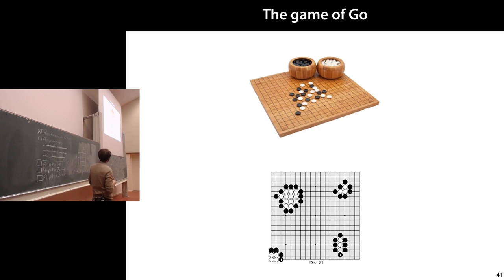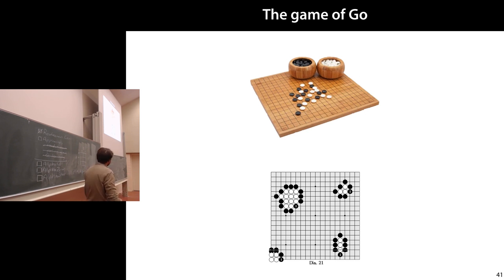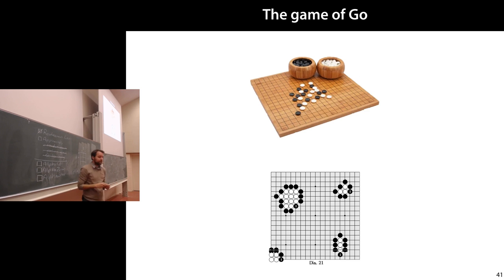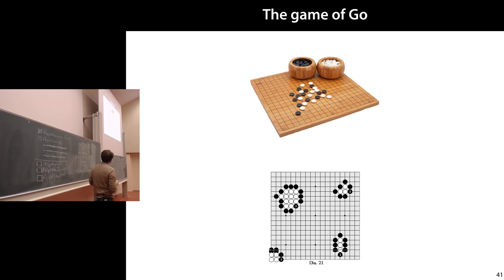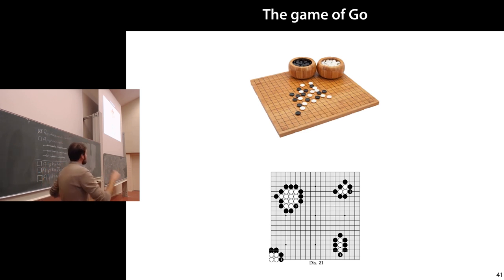To start with the game of Go: it's actually simpler than chess in many ways. We have a board with a grid, and players alternate placing white and black stones on the points where grid lines intersect. What you want to do is encircle the stones of the other player — if you're black and encircle white stones, you take them off the board and they count toward your point total. Once the whole board is filled, all the encircled places are counted up for your final score.